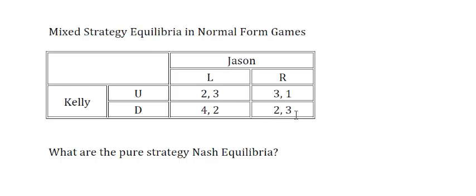Let's look at the bottom right pair of strategies. If Kelly knows that Jason is playing right, she's not going to play down — she's going to play up so that she gets 3 instead of 2. So that's not an equilibrium. The one remaining thing to check is up-right. If Kelly is playing up and Jason is playing right, then Jason would rather switch to left and get 3 instead of 1. So the answer is: there are no pure Nash equilibria to this game.